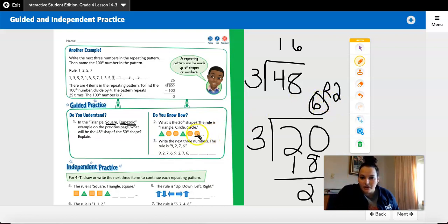If I ended on 18 with a circle, 19 would be a triangle, and then 20 would be a circle.